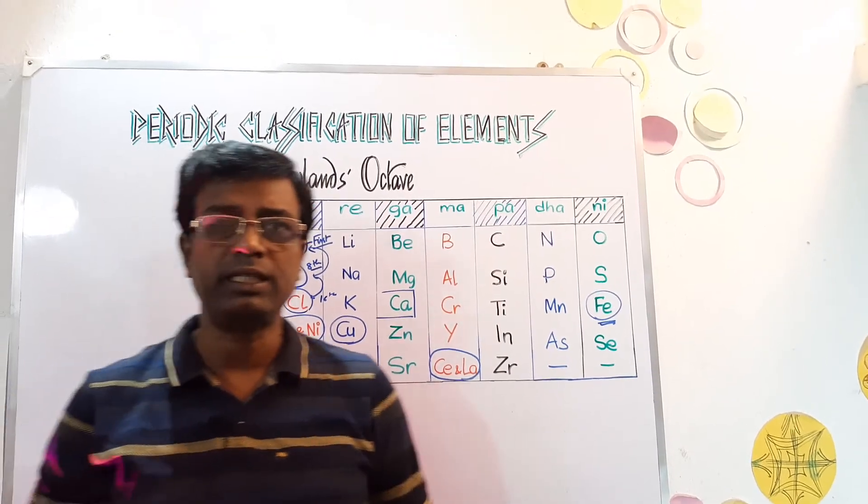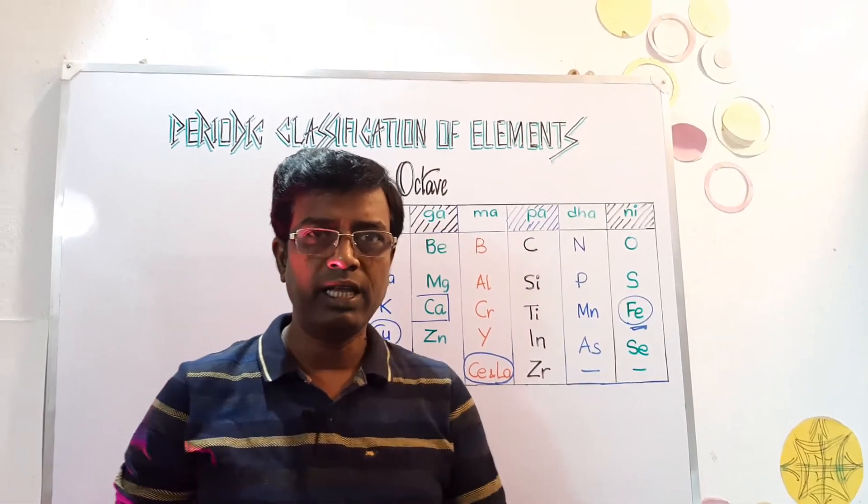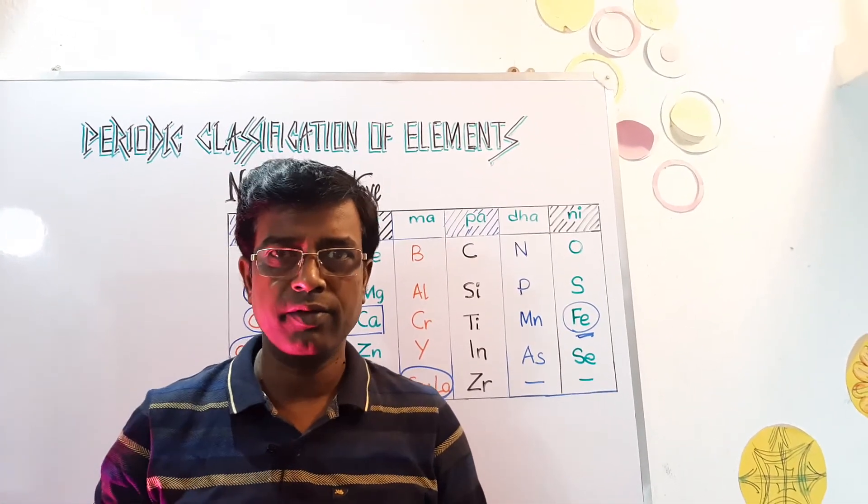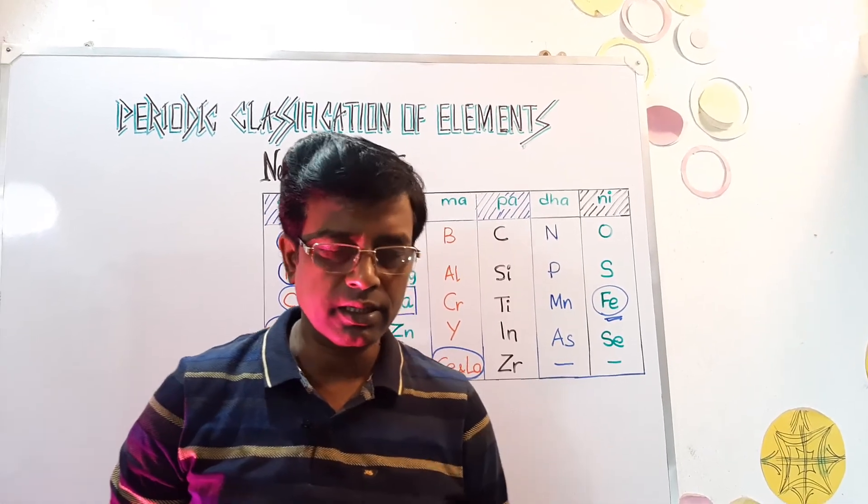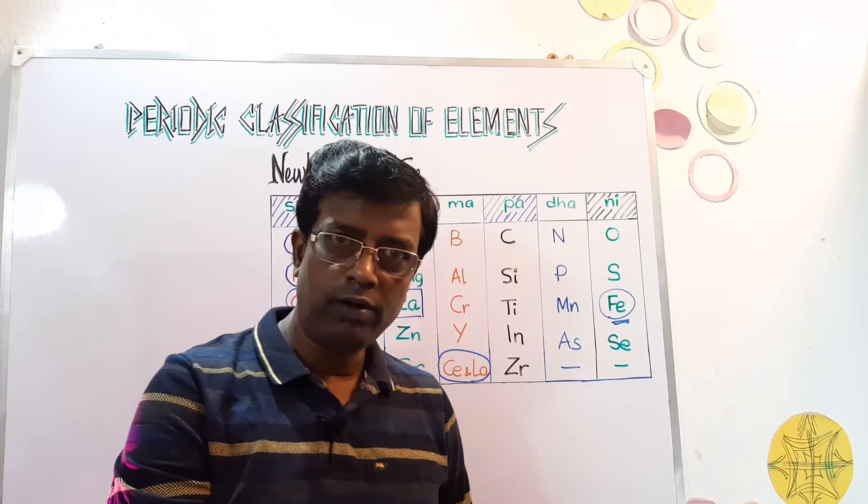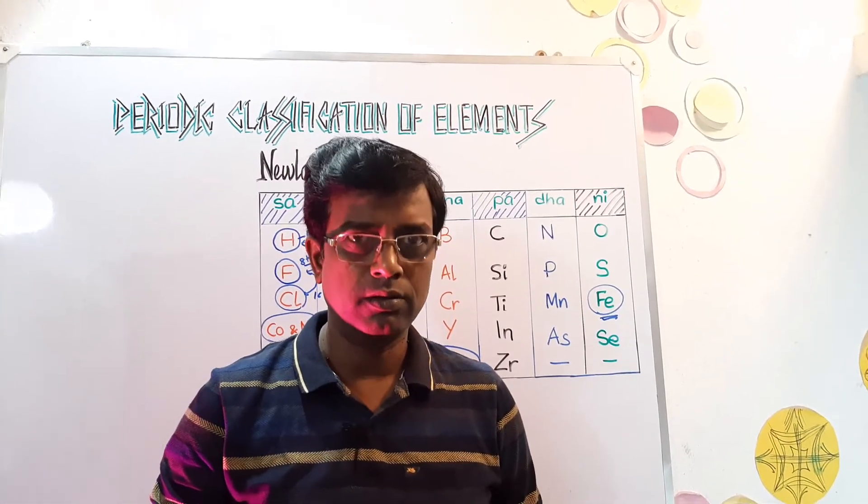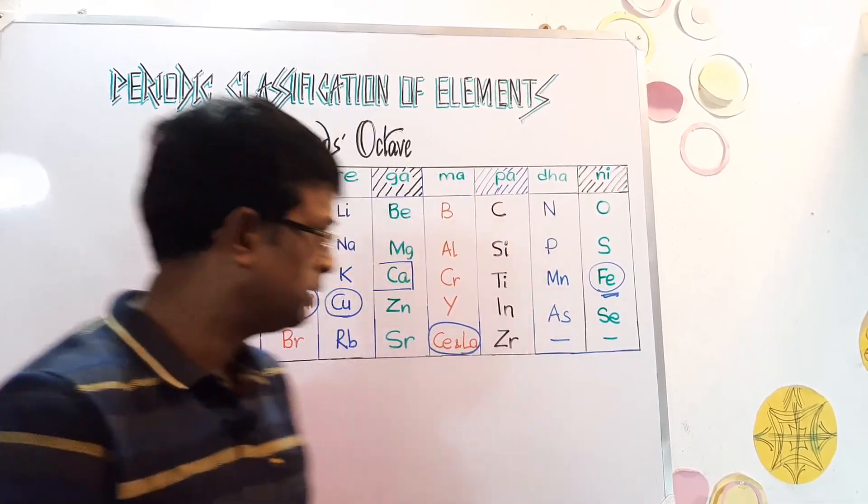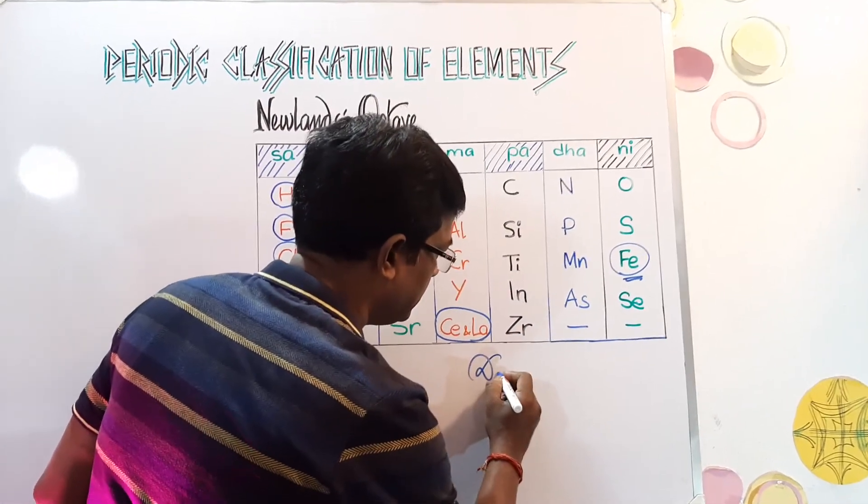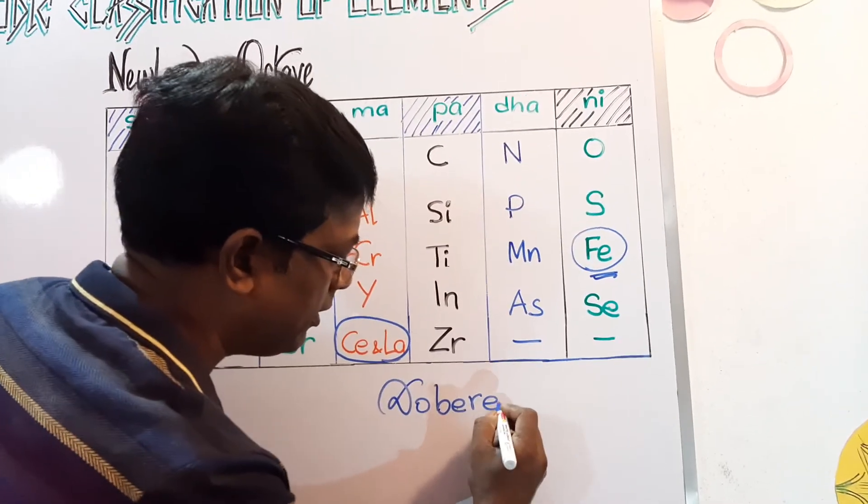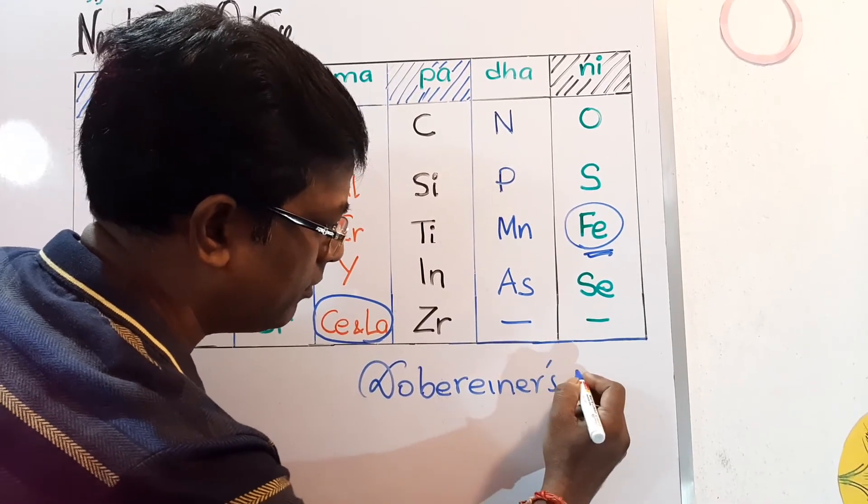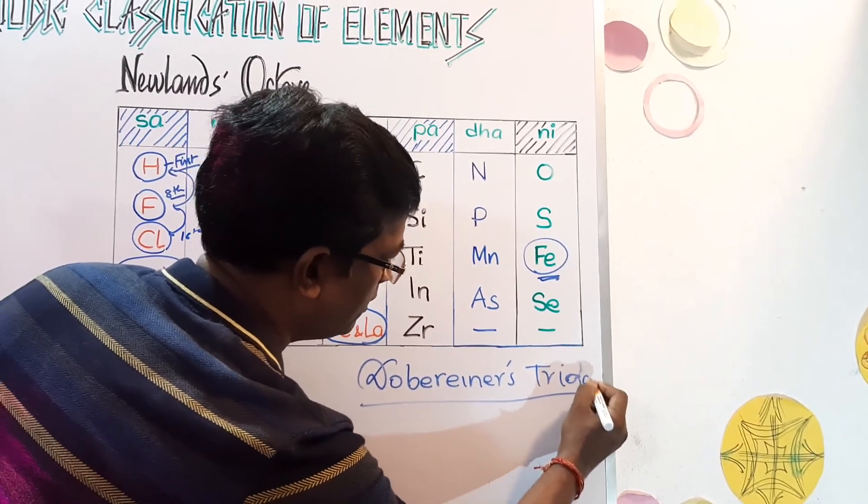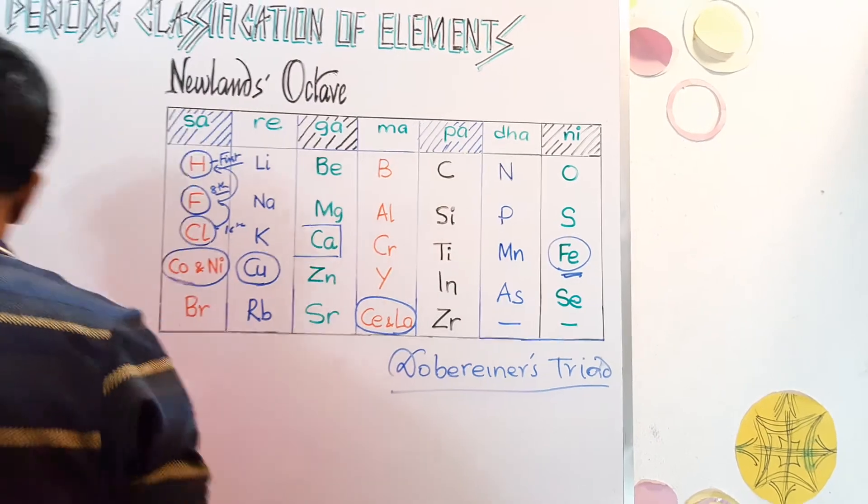In the upcoming session, we will be discussing about Mendeleev's periodic table, Mendeleev's periodic law, the various strengths and the drawbacks of Mendeleev and some board questions which generally comes in the exam, followed by modern periodic law. So, and yesterday we have discussed about Doberiner Triad. Doberiner Triad, I didn't mention his name. His spelling is D-O-B-E-R-E-I-N-E-R. Doberiner Triad, famous triad. T-R-I-A-D, not D. T-R-I-A-D. Doberiner Triad.